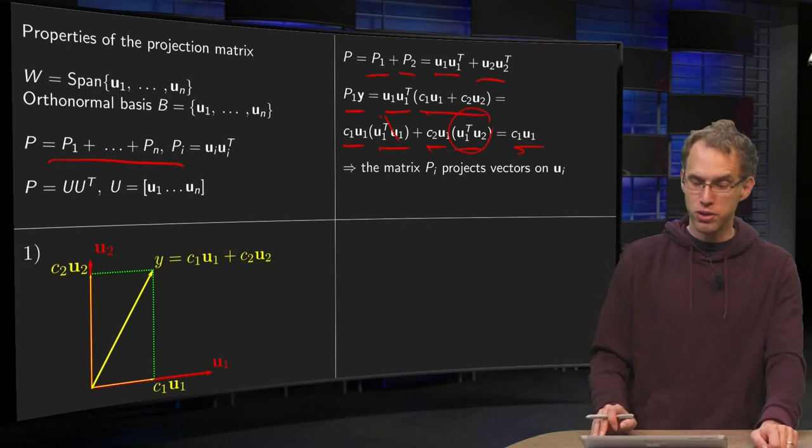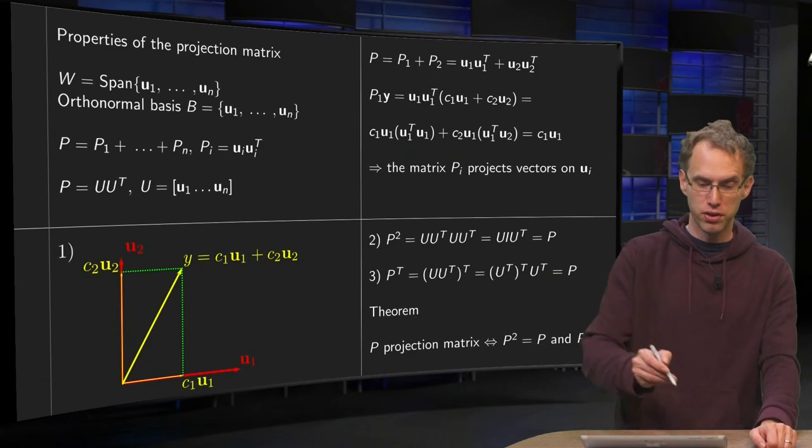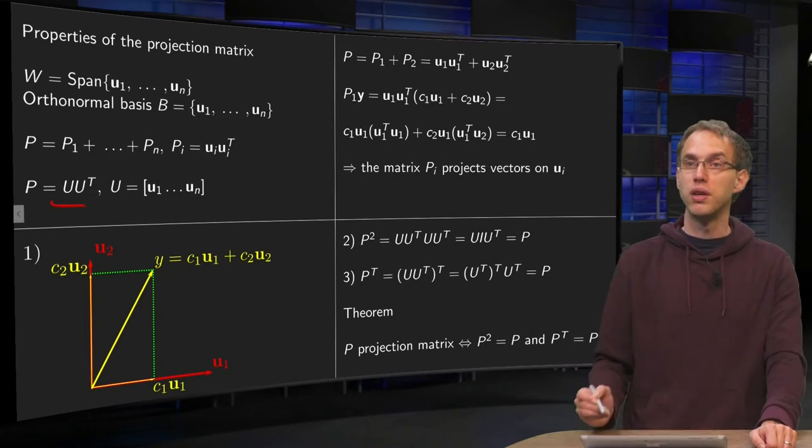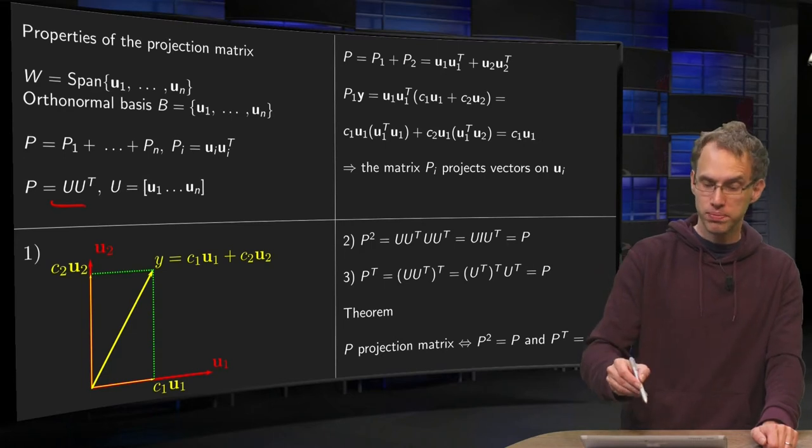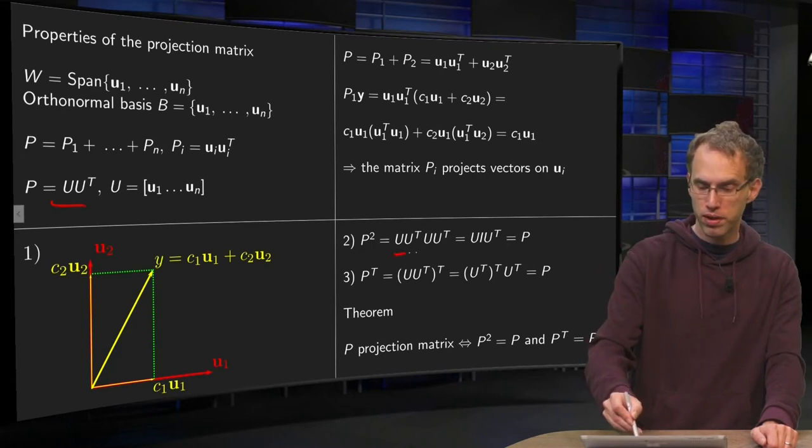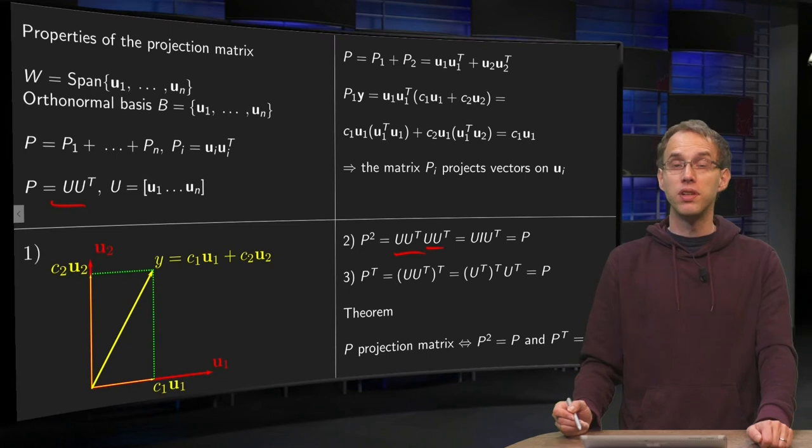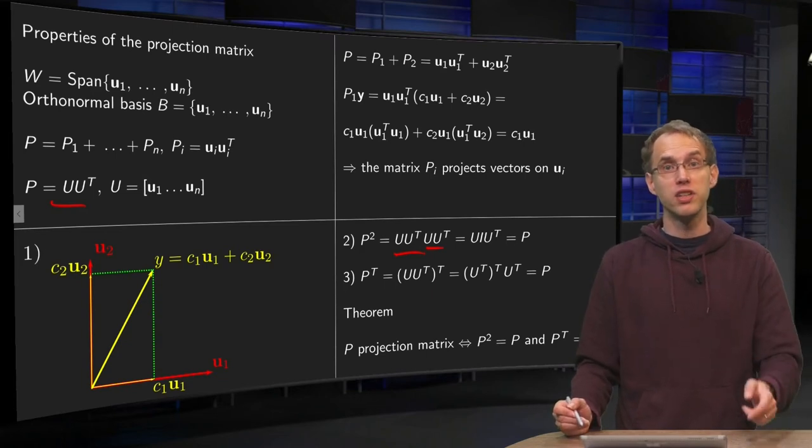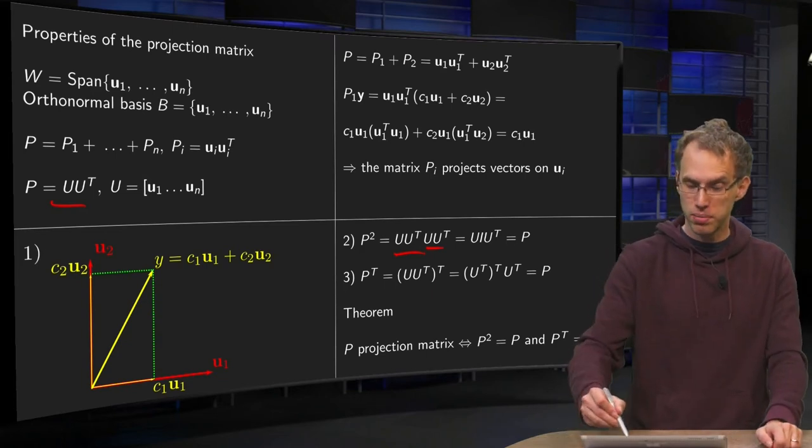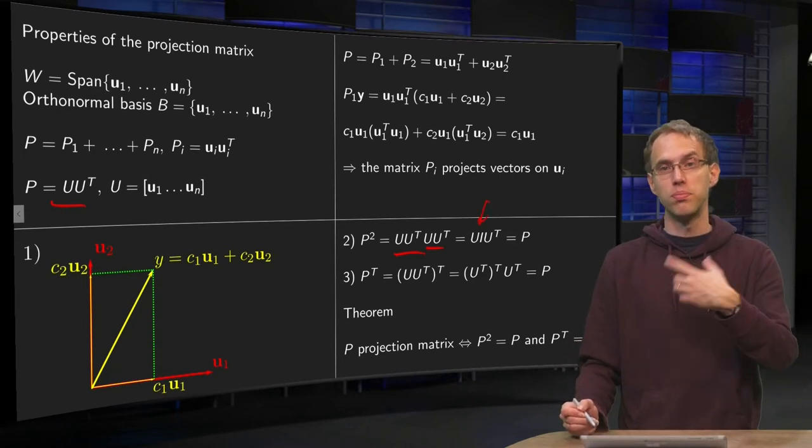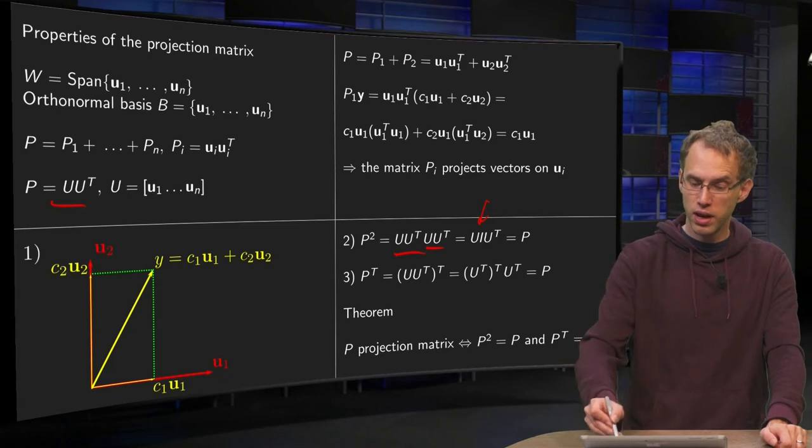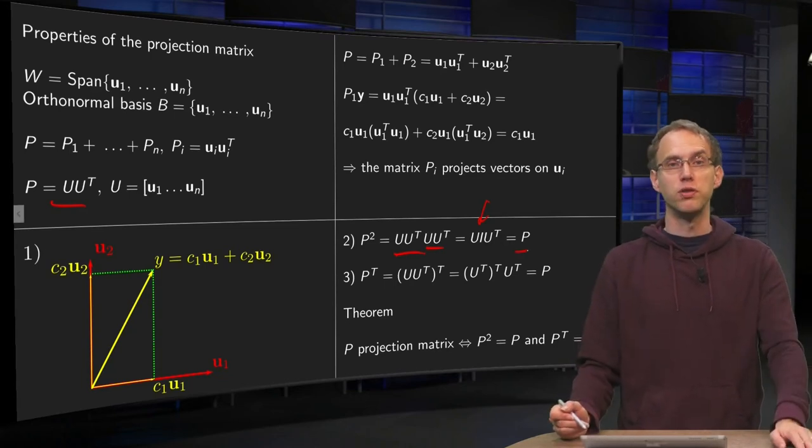The other way also has advantages. For example, if you write P equals U times U transpose, then something nice happens if you compute P squared. Here we have one P, here we have another P. But here you use an orthogonal matrix, so U transpose times U is the identity matrix. P squared equals U times U transpose times U times U transpose, which equals U times U transpose equals P. That makes sense, because if you project twice, you do the same as when you project once. After the first projection, the second projection doesn't do anything anymore.